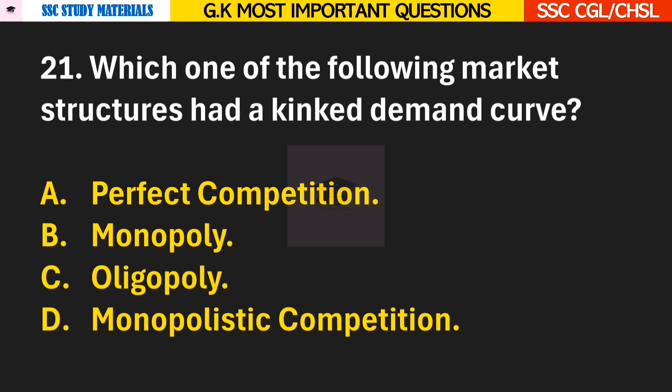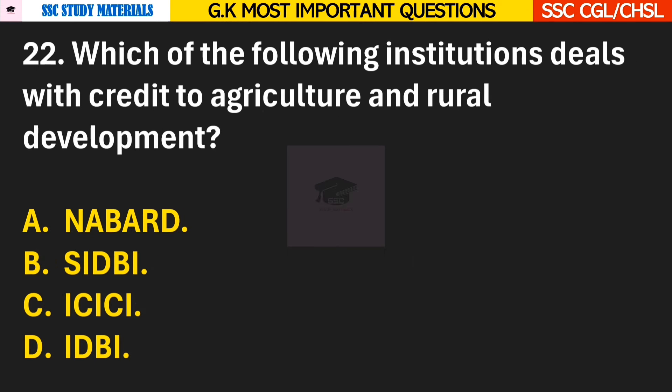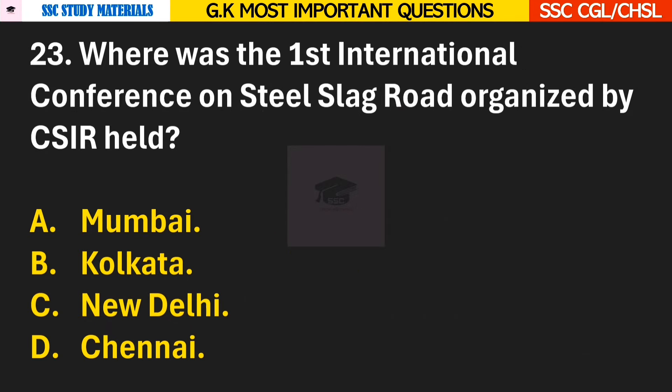Question 21: Which one of the following market structures has a kinked demand curve? Answer C — Oligopoly. Question 22: Which of the following institutions deals with credit to agriculture and rural development? Answer A — NABARD. Question 23: Where was the first international conference on steel slag road organized by CSIR held? Answer C — New Delhi.